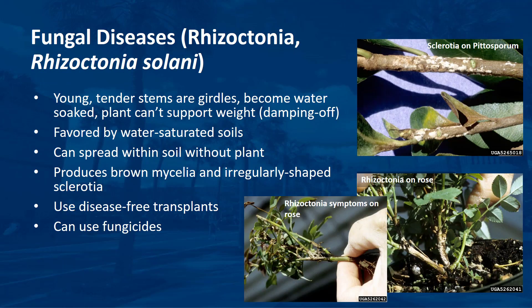With Rhizoctonia, young tender stems are girdled, become water-soaked, and are unable to support the plant's weight — a condition described by the term damping off. Water-saturated soils are conducive to disease development. Rhizoctonia can spread within soil without a host plant present. It produces constricted small mats of tightly woven mycelia called sclerotia — irregular in shape, brown in color, and resembling soil particles — which provide a seed-like mechanism for the fungus to survive unfavorable conditions such as drought or cold weather. Use disease-free transplants. Many fungicides are effective against Rhizoctonia, such as strobilurins, fludioxinil, and triflumizole.